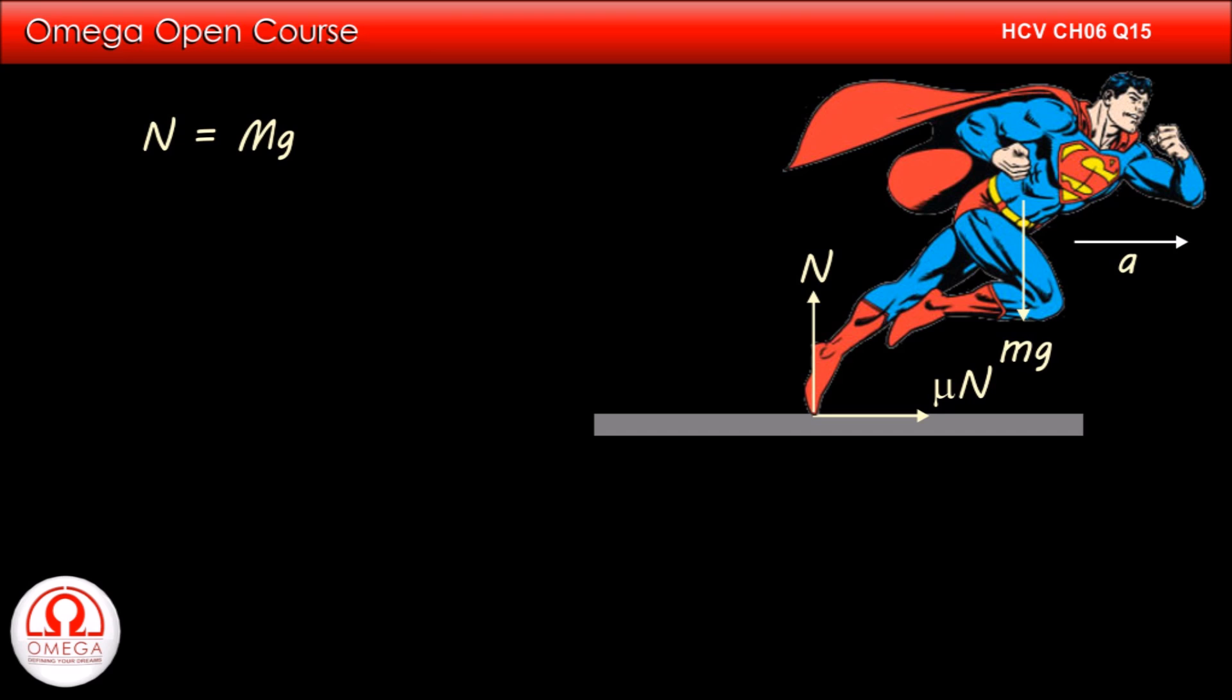Balancing the forces in vertical direction, we get N is equal to mg. The maximum value of friction force is μ into N. Putting the value of normal, we get F max is equal to μmg.